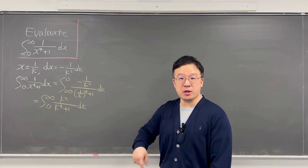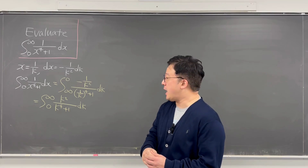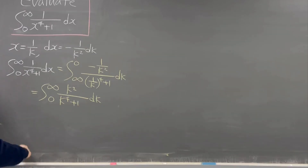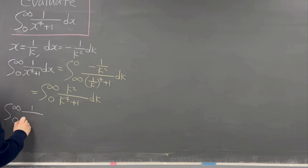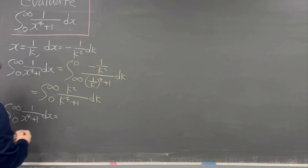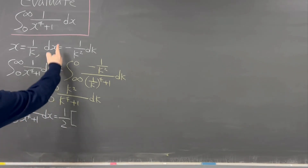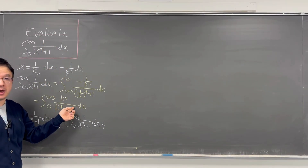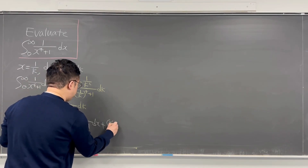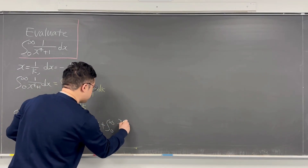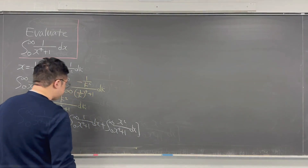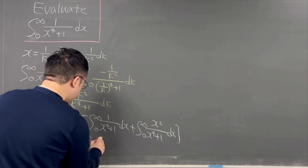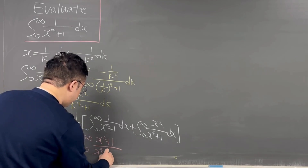Since k is just a dummy variable we can switch back to x, we can represent the integral we're looking for as the average of the sum of this integral with that integral. So the integral from 0 to infinity of 1 over x to the power of 4 plus 1 dx equals 1 over 2 times the bracket of the integral from 0 to infinity of 1 over x to the power of 4 plus 1 dx, plus the integral from 0 to infinity of x squared over x to the power of 4 plus 1 dx. So the right-hand side becomes 1 over 2 times the integral from 0 to infinity of x squared plus 1 over x to the power of 4 plus 1, dx.